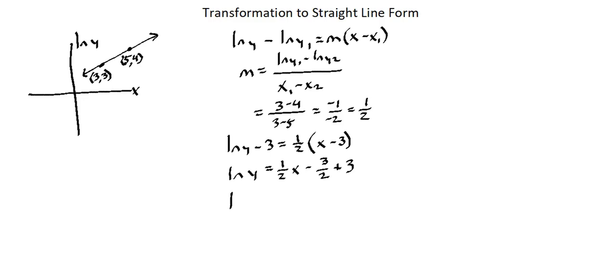And our final simplification step, natural log of y equals 1 half x. Negative 3 halves plus 3 is positive 3 over 2. So we have the equation for the relationship between natural log of y and x.